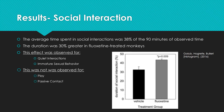The average time spent in social interactions for the control group of monkeys was 38% of the 90 minutes observed, which increased by 30% in fluoxetine-treated monkeys. This was observed only in quiet interactions and immature sexual behaviors, and was influenced by partner genotype variables such as high and low MAOA combinations.